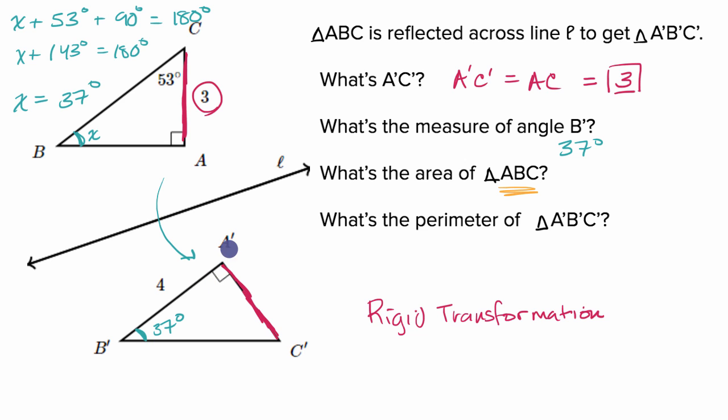We could try to find the area of A prime B prime C prime based on the fact that we already know that this length is three, and this is a right triangle. Or we could use the fact that this length right over here, four, from A prime to B prime is gonna be the same thing as this length right over here, from A to B, which is four. And so the area of this triangle, especially this is a right triangle, it's quite straightforward. It's the base times the height times 1/2. So this area is gonna be 1/2 times the base, four, times the height, three, which is equal to 1/2 of 12, which is equal to six square units.